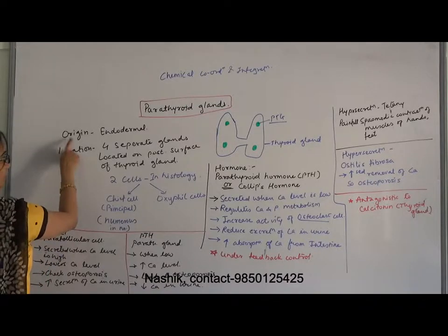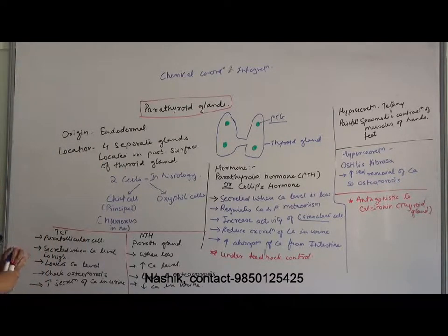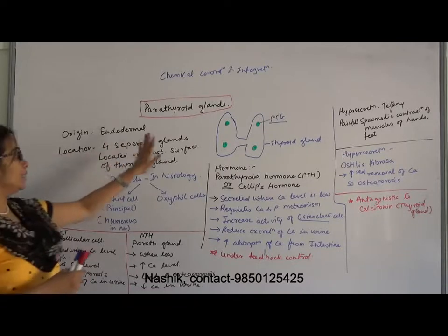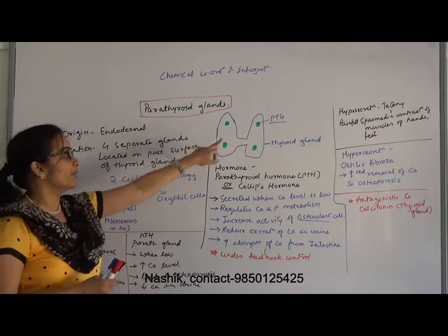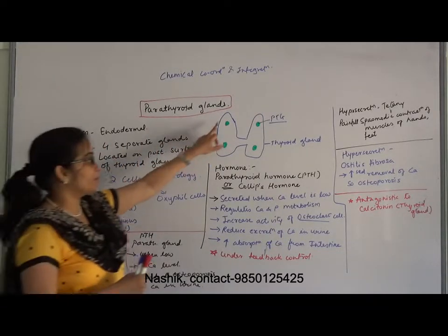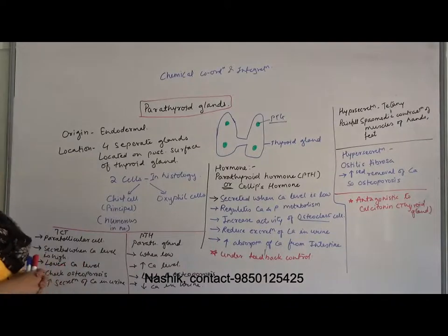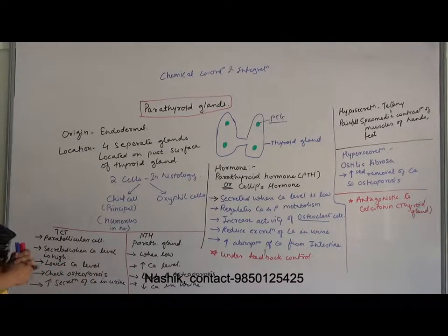The origin of the parathyroid is endodermal origin. There are four separate glands located on the back side — four separate pea-shaped glands located on the lobes of the thyroid gland.